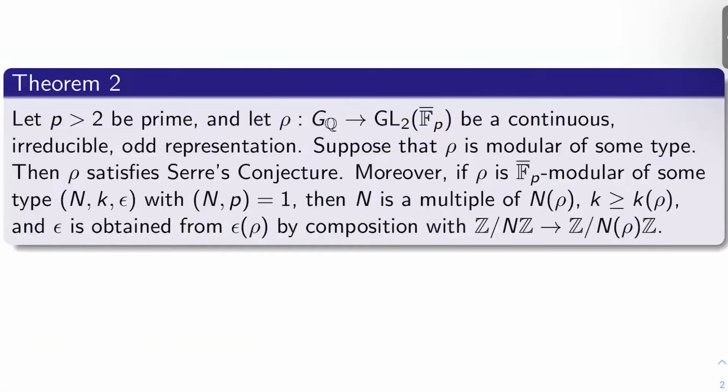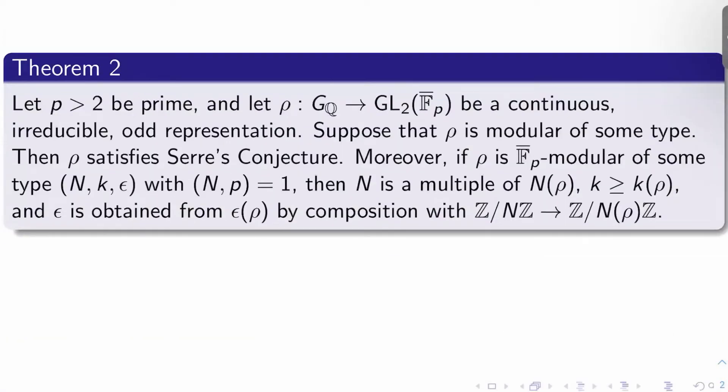So what's the big theorem of the chapter? Let P be a prime at least 2, and let ρ from G_Q to GL_2 of F_p_bar be a continuous irreducible odd representation which is modular of some type.